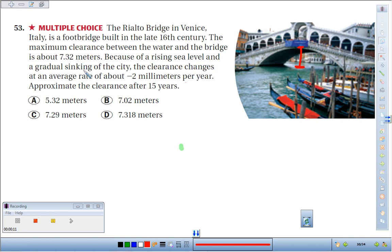Because of a rising sea level and a gradual sinking of the city, the clearance changes at an average rate of about negative 2 millimeters per year. Approximate the clearance after 15 years. Well,